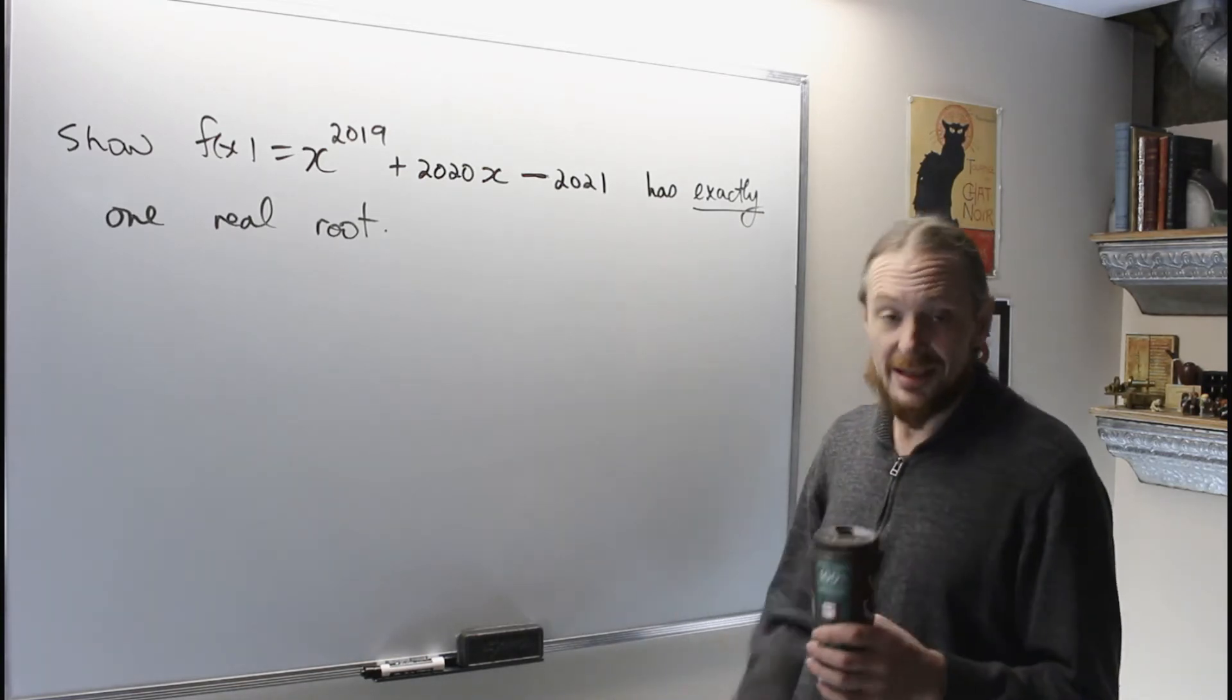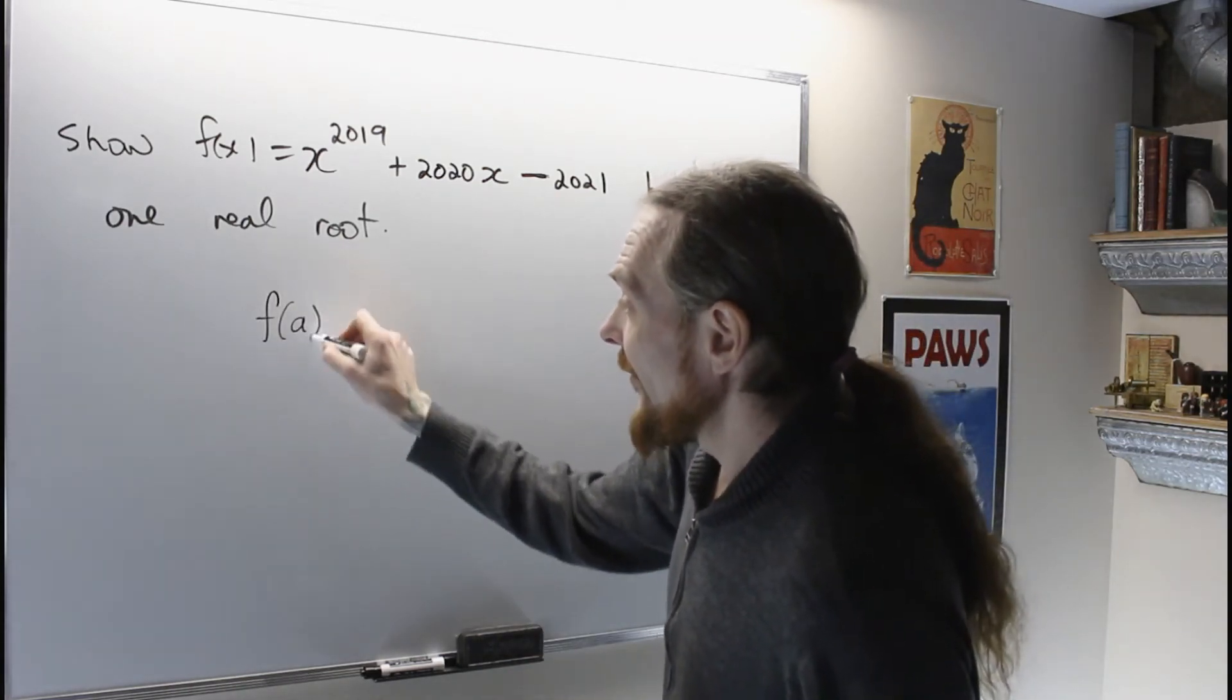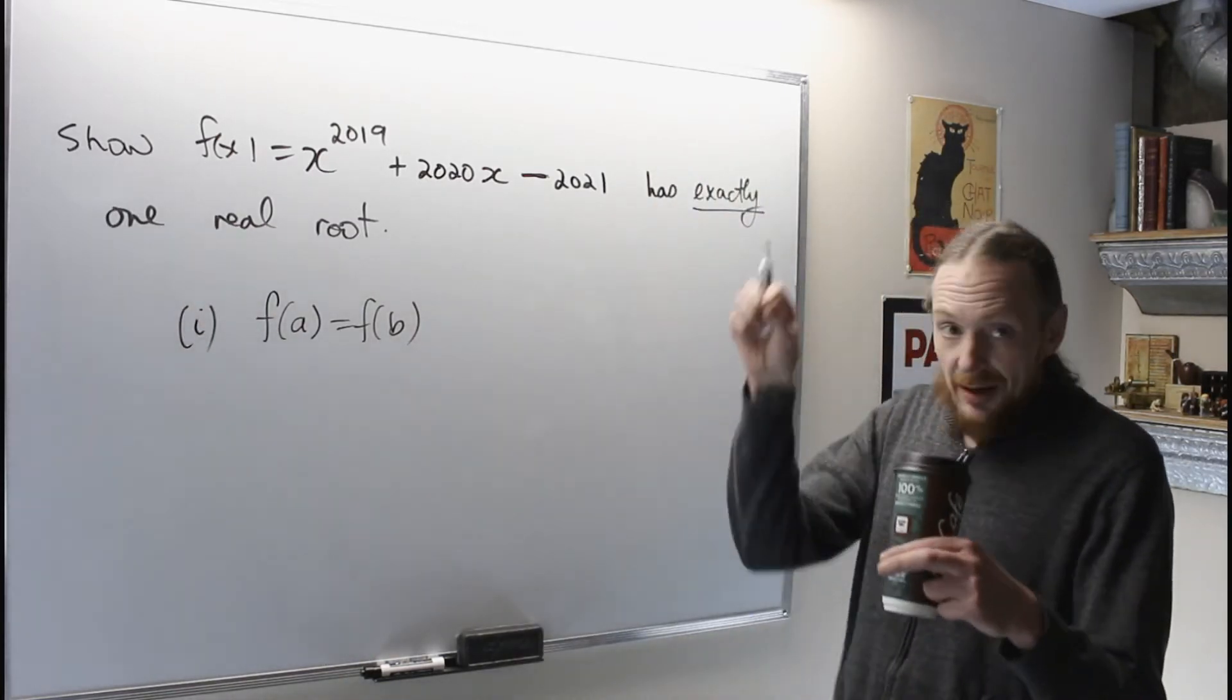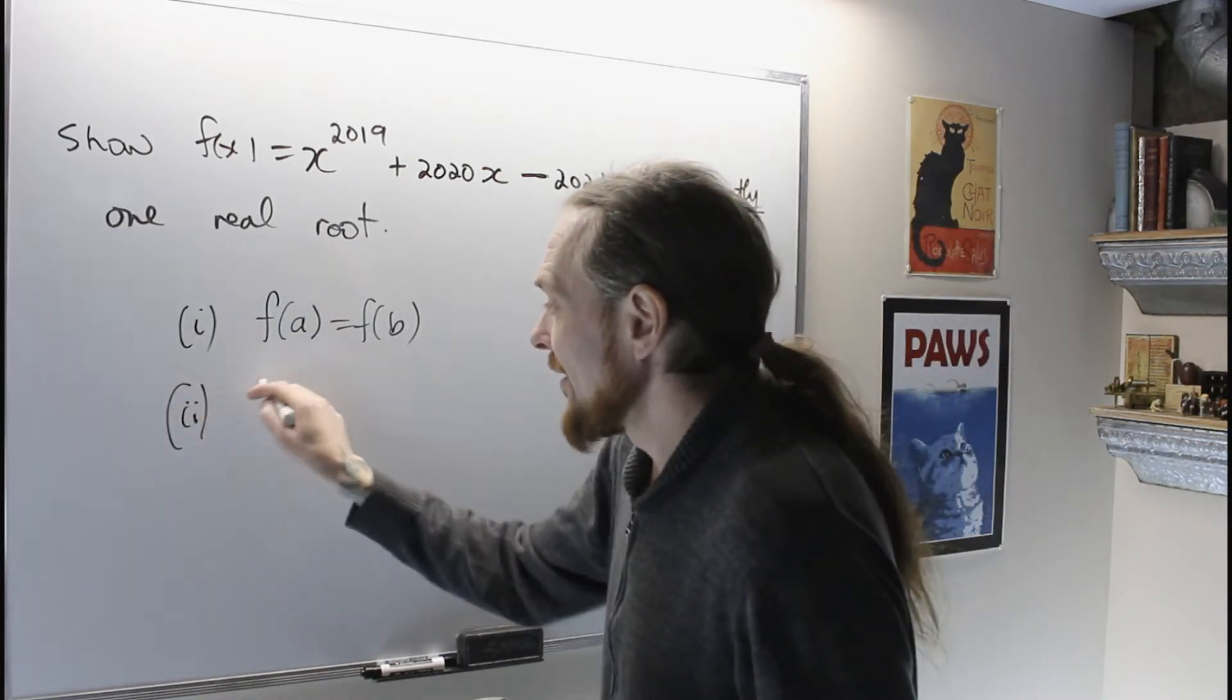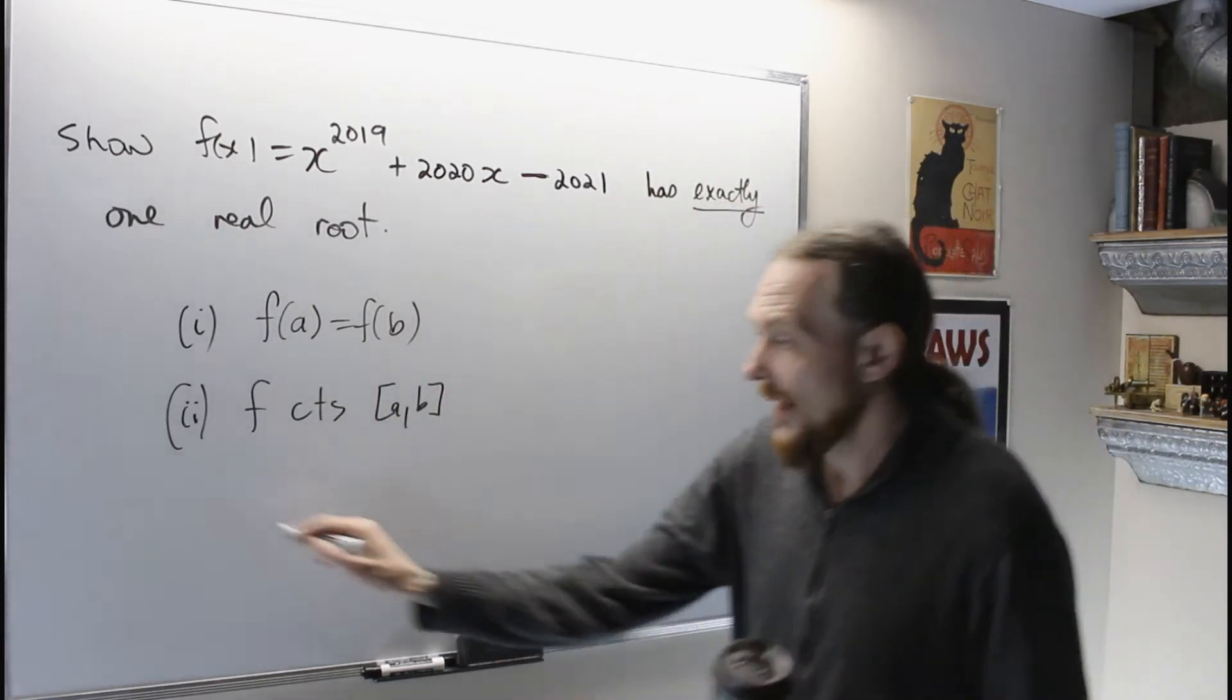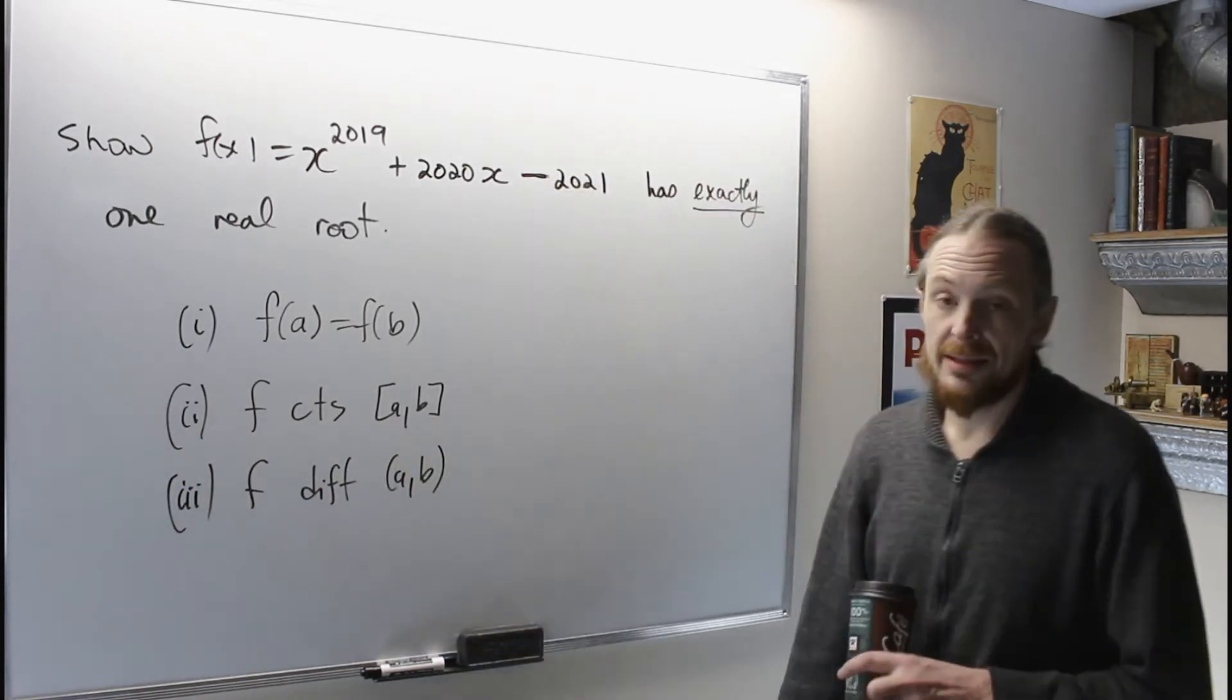and what Rolle's theorem is essentially the bump theorem. So we're going to go over this, it also has several conditions. What I need is, I need f of a to equal f of b for some interval, so that it comes back on itself. I also need that f is continuous on the closed interval a, b, and I need that f is differentiable on the open interval a, b, that I'm trying to consider.